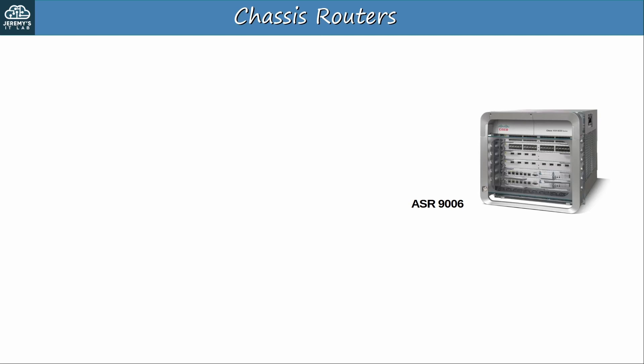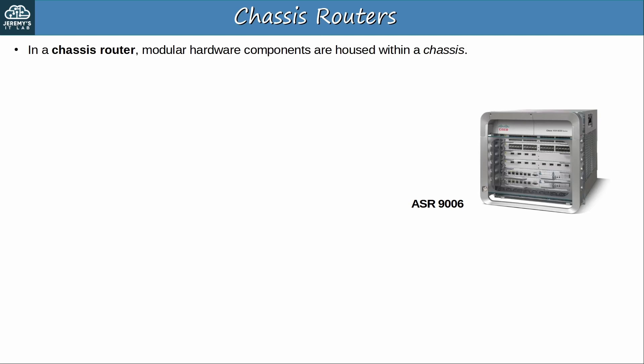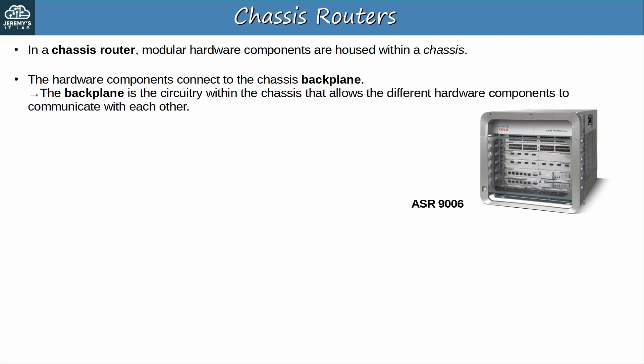Now let's look at chassis routers in more detail. In a chassis router, modular hardware components are housed within a chassis. Modular means they can be added and removed — you can customize the device to fit your needs. The hardware components connect to the chassis backplane, which is the circuitry within the chassis that allows the different hardware components to communicate with each other. It connects all of the separate modular components together. The connections between the hardware components form the switch fabric — that's the name for the web of connections between all of the components, made via the backplane circuitry.